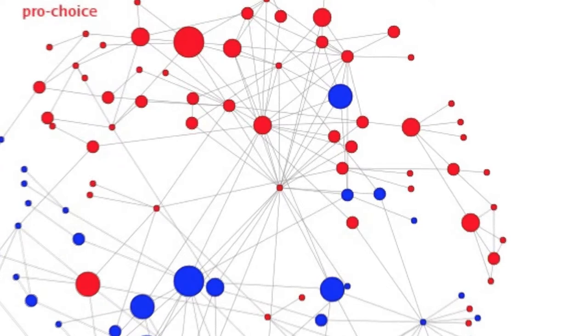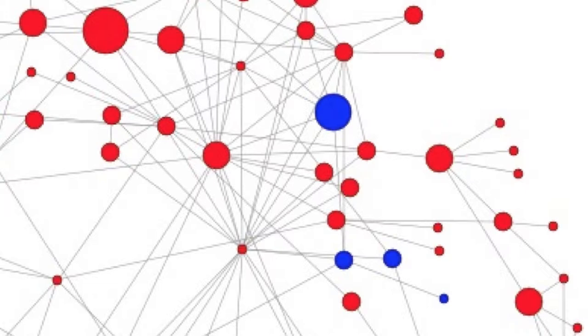The other interesting thing about this type of diagram is that you immediately find these interesting nodes that seem to be taking a bridging role between two communities.